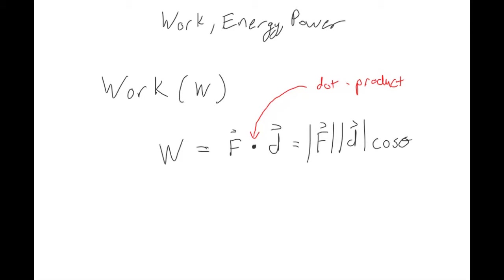You take the magnitudes of each vector, multiply them together, and then multiply by the cosine of the angle between them. Another thing to notice about this work variable is that it's a scalar.